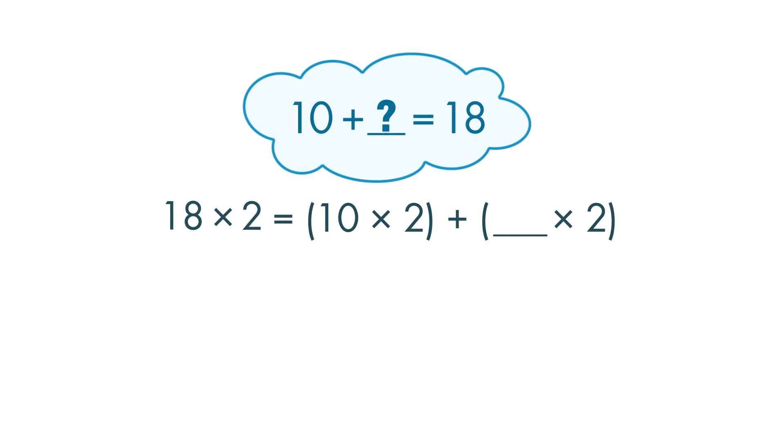To solve 18 times 2 using the distributive property, we can break the larger number, 18, into parts. 10 plus what is equal to 18? 8.